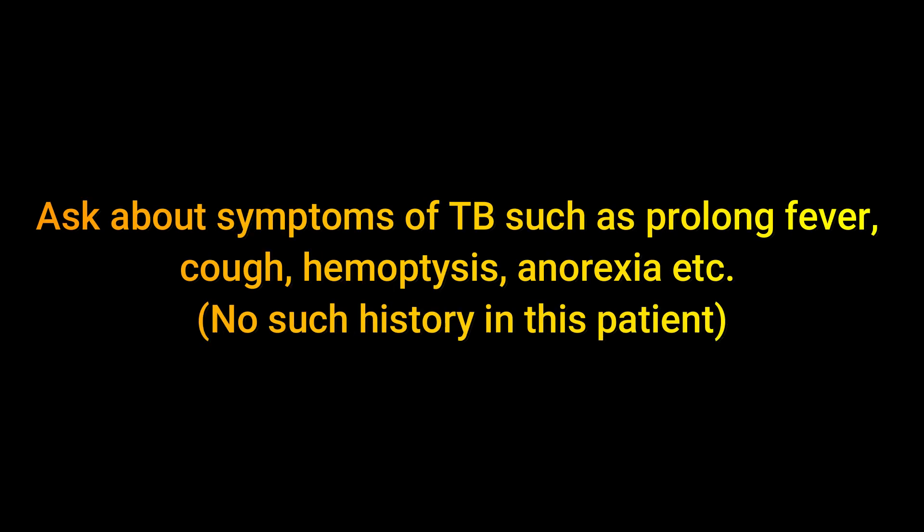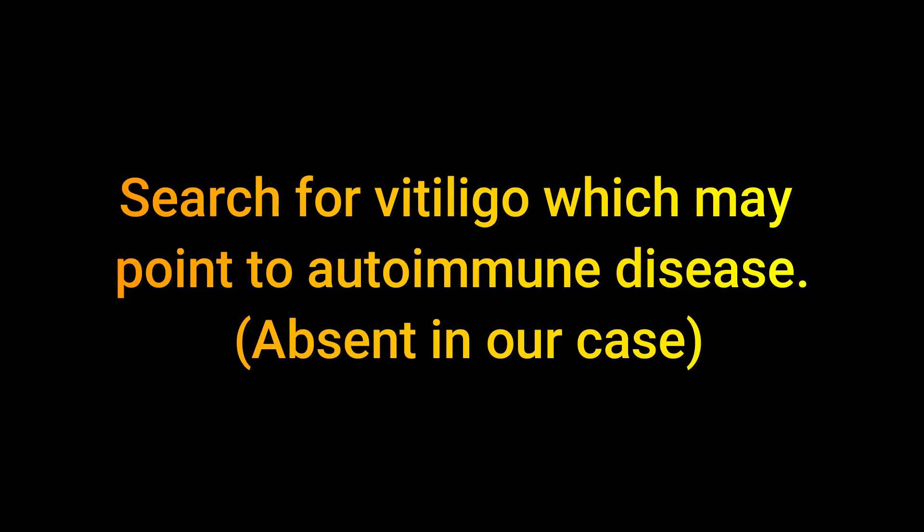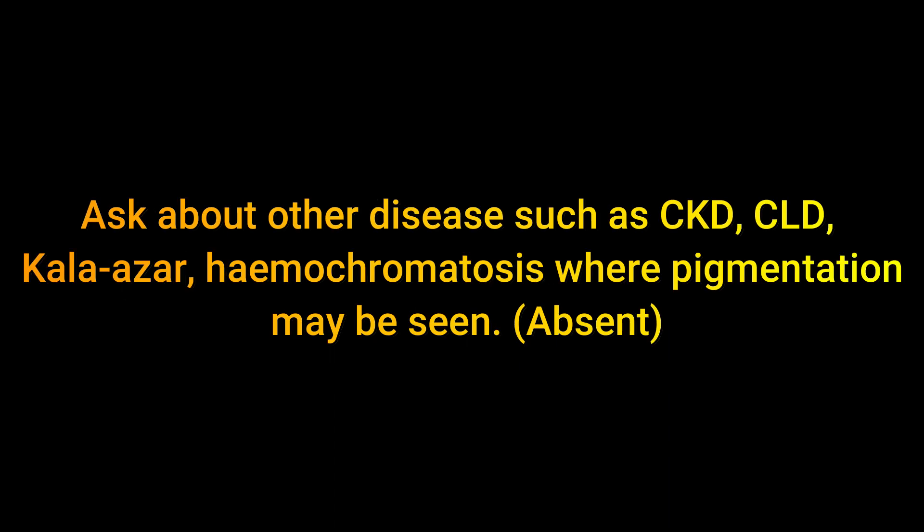Ask about tuberculosis — such as prolonged fever, hemoptysis, and anorexia — though no such history was present in our patient. Search for vitiligo, which may point to autoimmune disease, though it was absent in our patient. Ask about other diseases such as chronic kidney disease, chronic liver disease, collagen disorders, or hemochromatosis, as higher pigmentation may occur — this history was also absent.